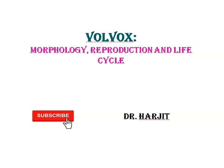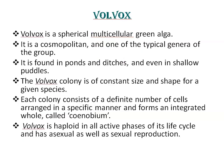Today we will be discussing Morphology, Reproduction and Life Cycle of Volvox. Volvox is a spherical or ovoid, multicellular green alga belonging to Division Chlorophyta. It is distributed worldwide and comprising about 20 species. Volvox is a cosmopolitan and one of the typical genera of the group.